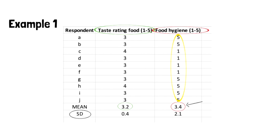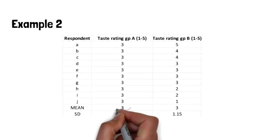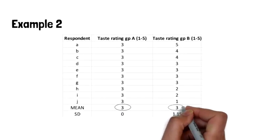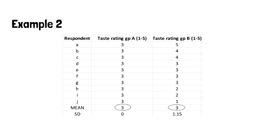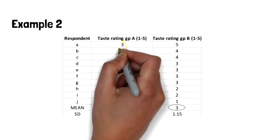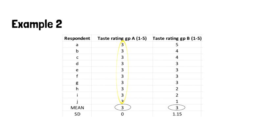In example 2, we see group A and B distribution of responses with the same mean value. Group A has all responses exactly equal to the mean value, showing that the responses did not deviate from the mean, and hence standard deviation is zero. Group B has the same mean as group A, but the standard deviation is 1.15, which shows that individual responses deviate by a little more than one point away from the mean.